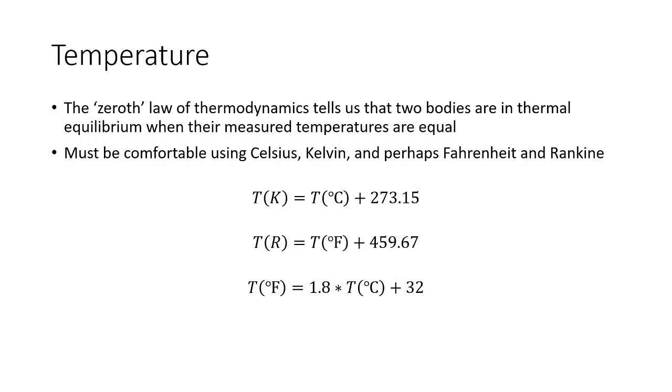To convert from Celsius to Kelvin, we just need to take our temperature in Celsius and add 273.15. And similarly, if we have temperature in Fahrenheit, to convert that to Rankine scale, we simply need to add 459.67. Now, the Kelvin scale and the Rankine scale are absolute temperature scales. That means that at zero Kelvin or zero Rankine, you're at absolute zero. Whereas for Celsius or Fahrenheit, you could have negative temperature values.